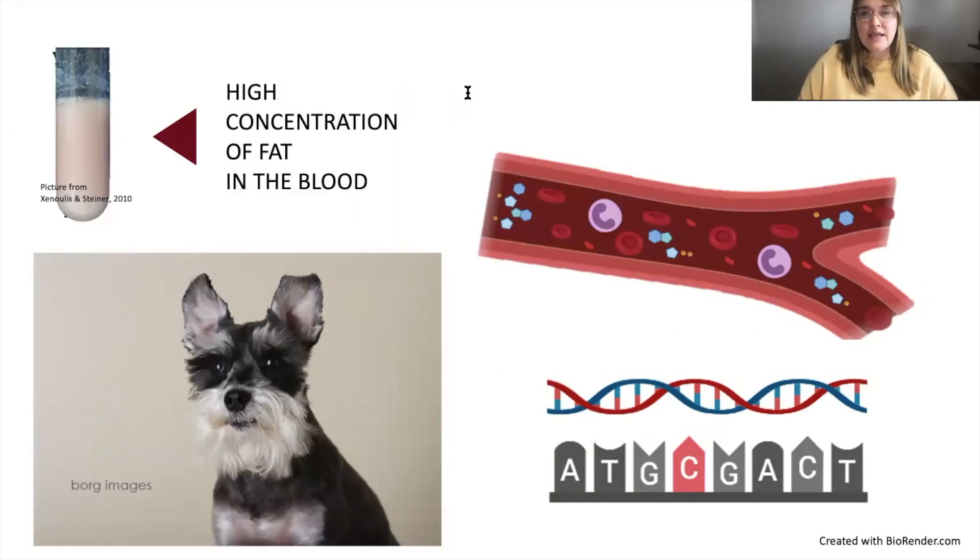By the age of 10, more than 75% of Miniature Schnauzers suffer from hyperlipidemia, which means they have an abnormally high concentration of fat or lipids in their blood. Some of these dogs have such severe hyperlipidemia, their blood serum, which is supposed to be clear, looks like cream.